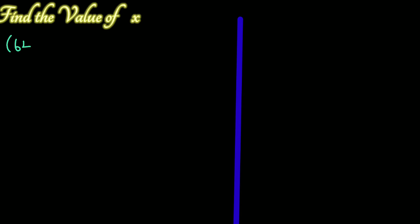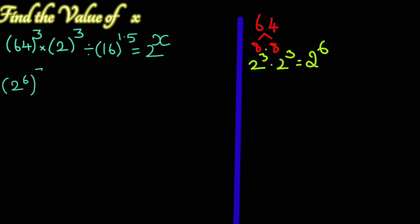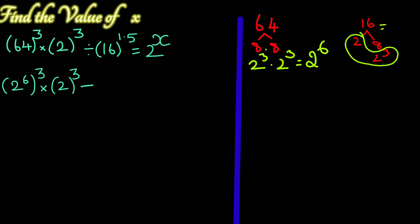Find the value of x when 64 to the power 3 times 2 to the power 3 divided by 16 to the power 1.5 equals 2 to the power x. To find the value of x, we write the common base as 2. 64 is 8 times 8, and 8 is 2 cubed, so 64 is 2 to the power 6. We have 2 to the power 6 times 2 to the power 3 times 2 to the power 3 divided by 16, which is 2 to the power 4.